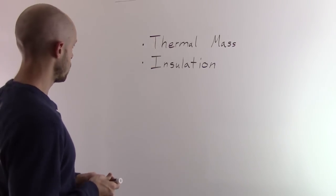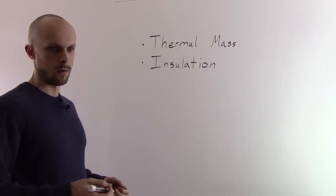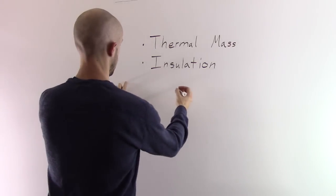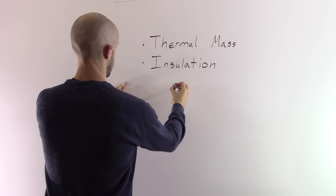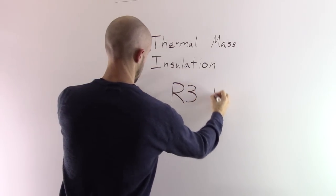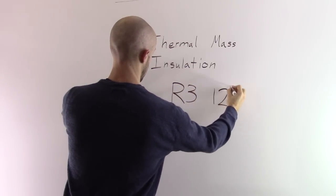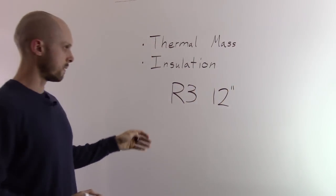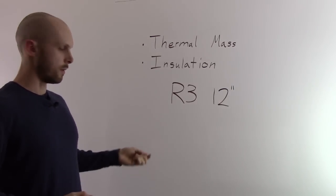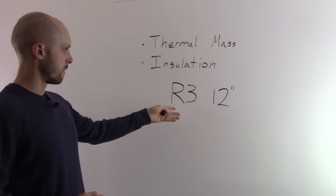And I'll try to explain that a little bit more here. So cob by itself has an insulation value of roughly R3 for a 12 inch thick wall. And this is just kind of a, it varies but some people have done tests and they've discovered it's about R3.